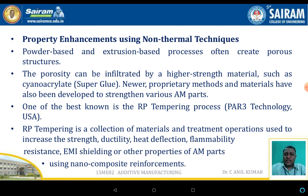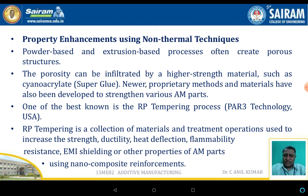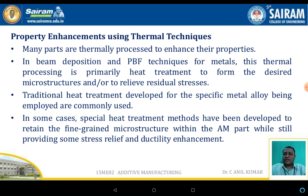Properties enhancement using thermal and non-thermal techniques: for non-thermal techniques, powder-based and extrusion-based processes often create a porous structure. The pores can be infiltrated by high-strength materials such as cyanoacrylate, which is super glue. Newer methods and materials have been developed to strengthen various additive manufacturing parts. One of the best known is the RP tempering process, which is a collection of material and treatment operations used to increase strength, ductility, heat deflection, flammability resistance, EMI shielding, and other properties using non-composite reinforcement.